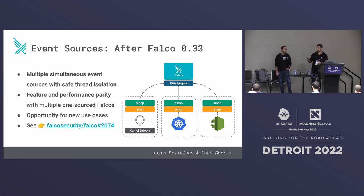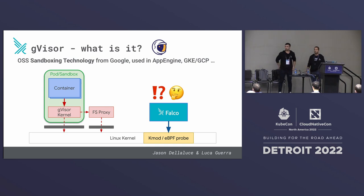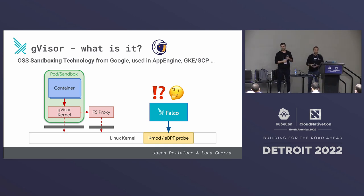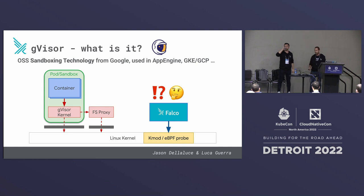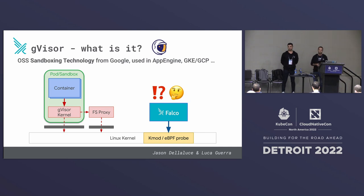Now Luca will go on with the latest updates. Another feature we recently introduced is support for gVisor. You might be asking, what is gVisor? Everyone is familiar with this technology. As a security person myself, I'm really excited about it because it's a sandboxing technology. It's been developed by the open source team at Google, and it's used in GKE and GCP. It's completely open source and can be deployed in a variety of different systems, including on top of Kubernetes.